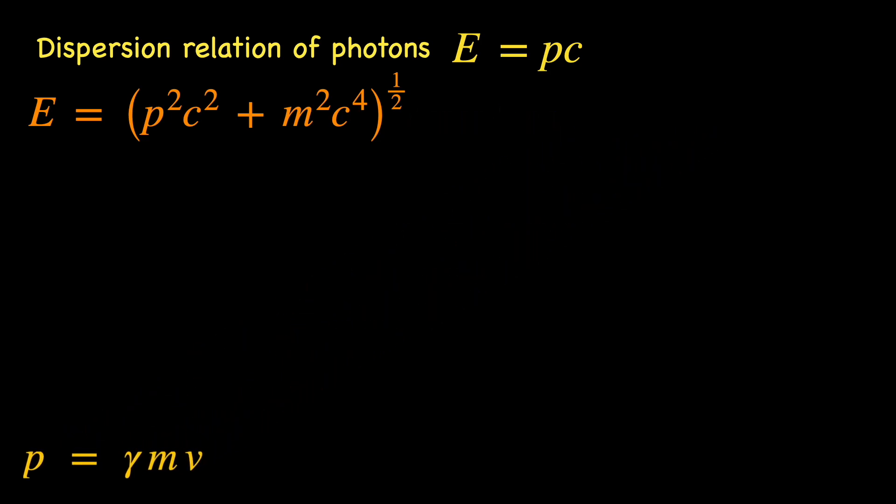So, in the dispersion relation, the particle's rest mass m not only appears in the rest energy term m squared c to the power 4, it is also hidden in the p squared c squared term.